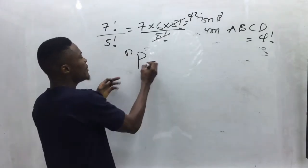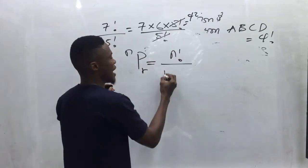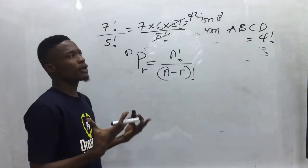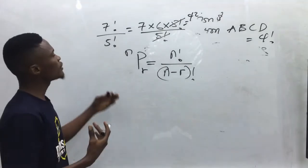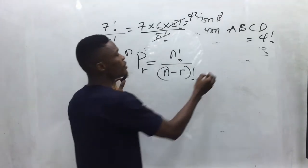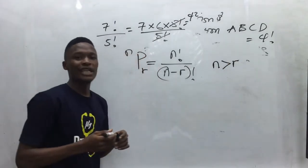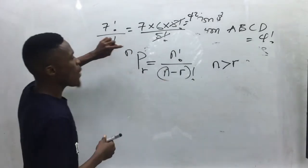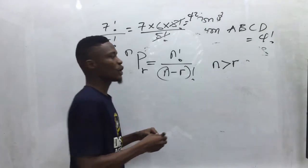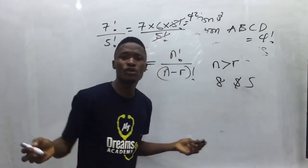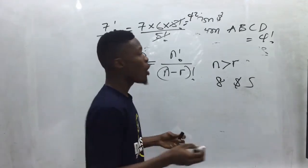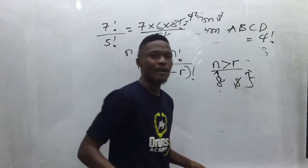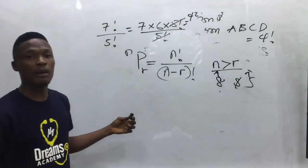The formula for permutation is n factorial over (n minus r) factorial. Always note that n must be greater than r. If you're confused which value is n and which is r, remember: n is always the larger number. So for eight people and five seats, n is eight and r is five.